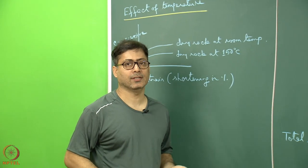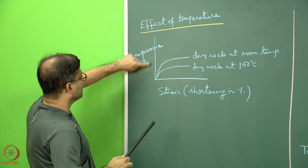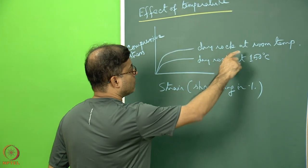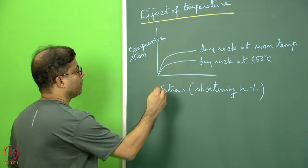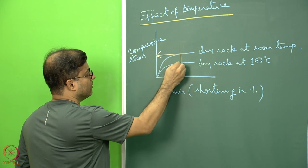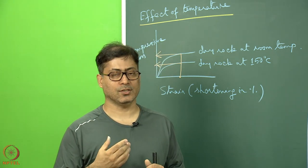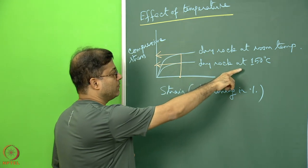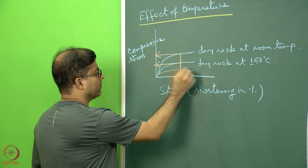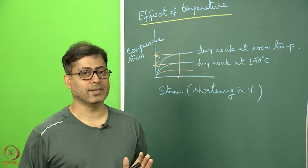Temperature variation also affects rock strength. Plotting compressive stress against shortening strain percentage, dry rock at 150°C requires lower stress to produce a given strain than dry rock at room temperature. This means as temperature increases, the solid rock becomes easier to deform. At even higher temperatures, deformation becomes still easier, though if the material melts, properties may change and the graph may behave differently.